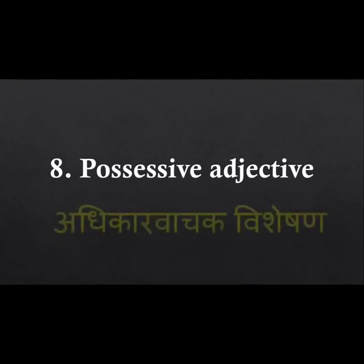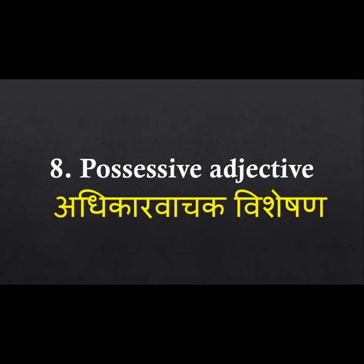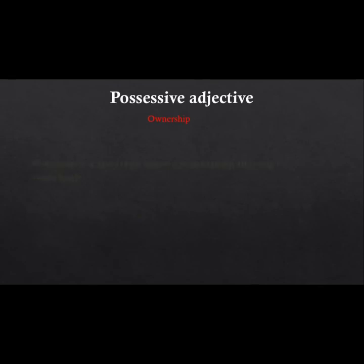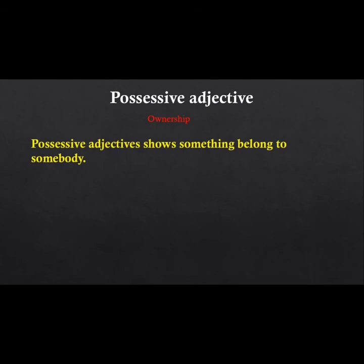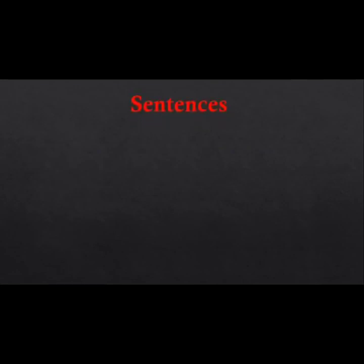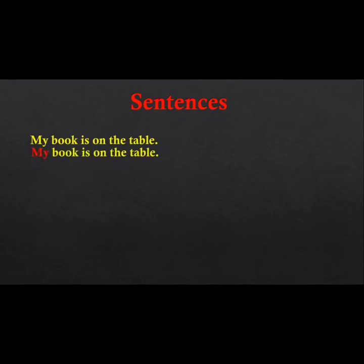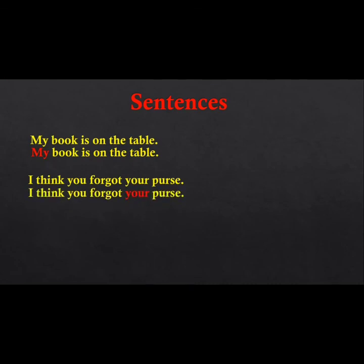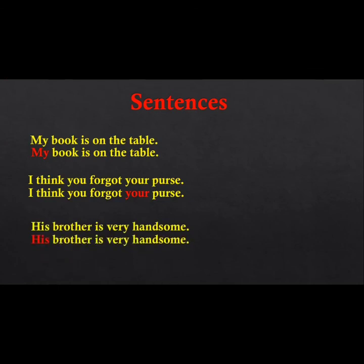The eighth and last type is possessive adjective, called 'adhikar vachak visheshan' in Hindi. Possessive adjectives show ownership — that something belongs to somebody. Examples: my, your, its, their, his, her, etc. In sentences: 'My book is on the table' — my is a possessive adjective. 'I think you forgot your purse' — your is a possessive adjective. 'His brother is very handsome' — his is a possessive adjective.